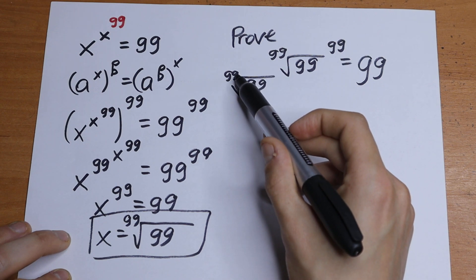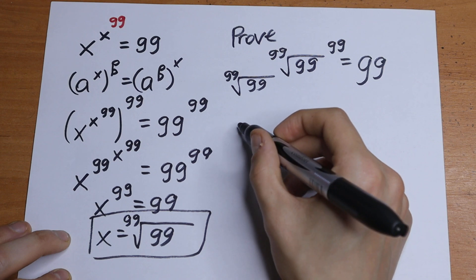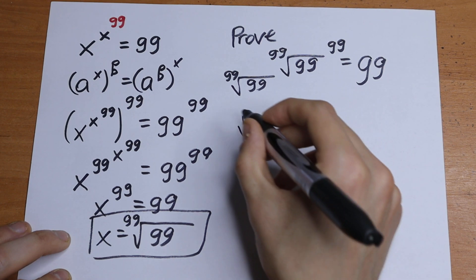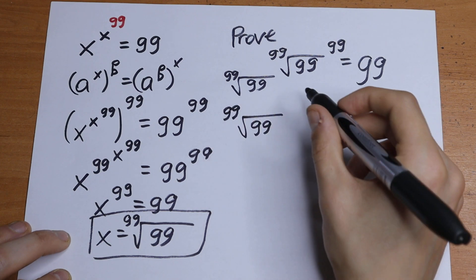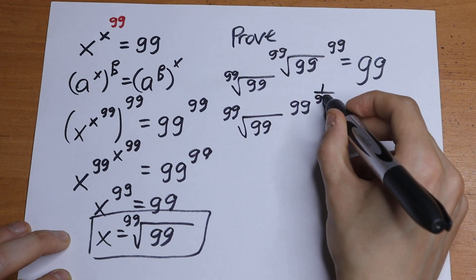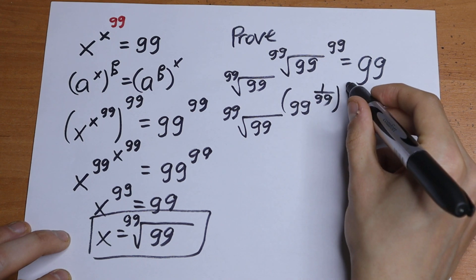Because we will have 99th root raised to the 99th power. I'll write it in the next way: 99 to the power 1 over 99, raised to the 99th power.